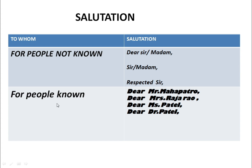Another way of writing salutations to people who are well known: you can write 'Dear Mr. Mahapatra', 'Dear Mr. Sarajarao', 'Dear Ms. Patel', 'Dear Dr. Patel'. You can write the short name of the person you are well known with. But if he is senior, you can also write 'Dear Sir', 'Sir or Madam', or 'Respected Sir'. In this way, salutations can be written in two ways.